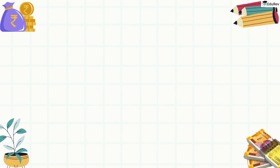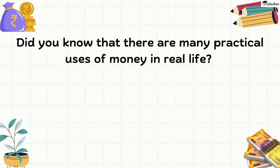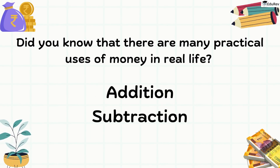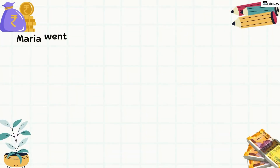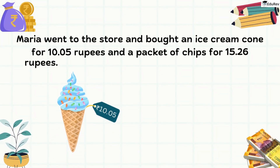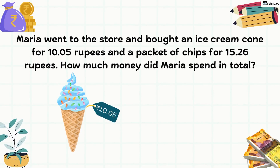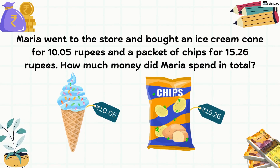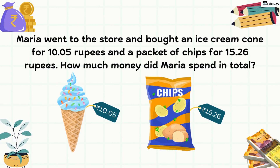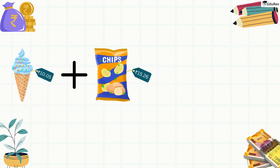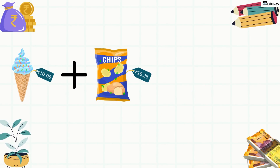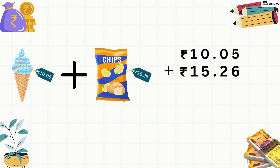Moving on, children, did you know that there are many practical uses of money in real life, like addition and subtraction? Let's study addition first. Maria went to the store and bought an ice cream cone for 10.05 rupees and a packet of chips for 15.26 rupees. How much money did Maria spend in total? To solve this problem, we need to add the amounts: 10.05 rupees plus 15.26 rupees.